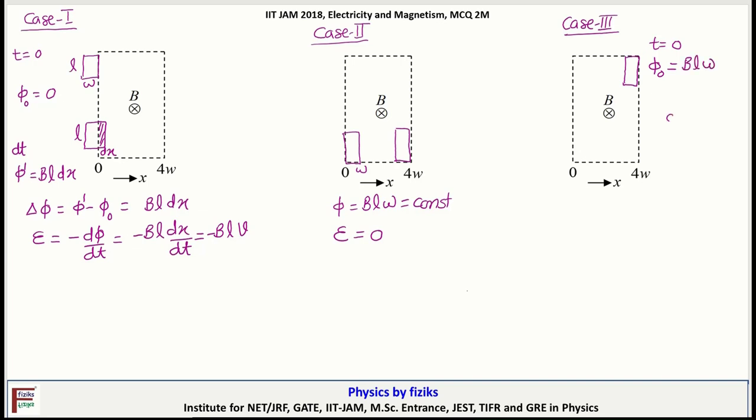Now in time dt assume it moves a distance dx. So flux phi dash will be B L dx minus dx because width is W. So change in flux is given by phi dash minus phi 0 and this will be minus B L dx.